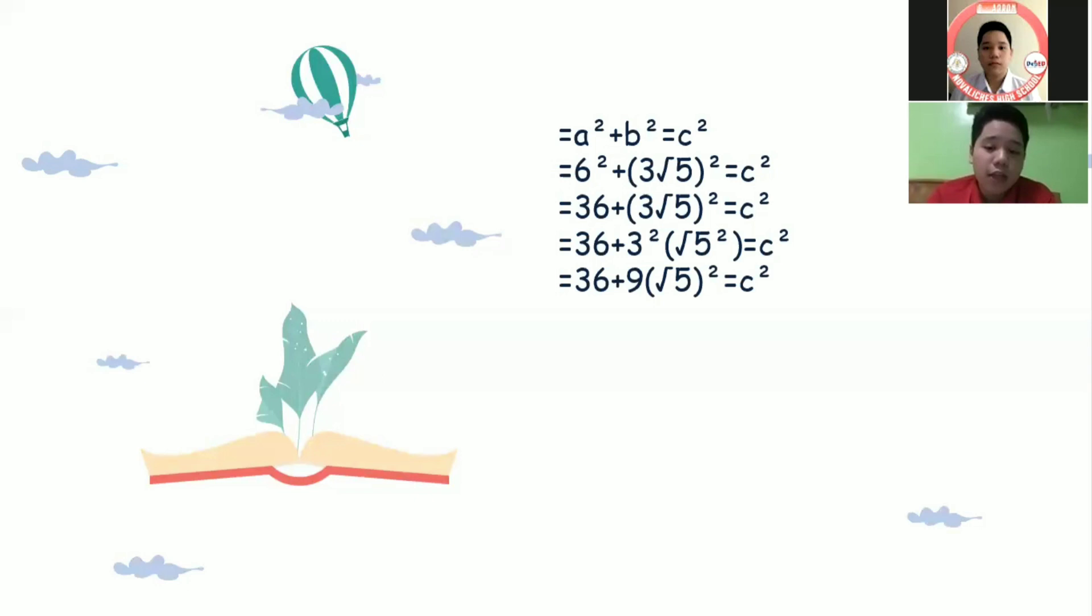Then we need to place the exponent under the root resulting to square root of 5 squared. And our equation will be 36 plus 9 times quantity square root of 5 squared equals c squared.